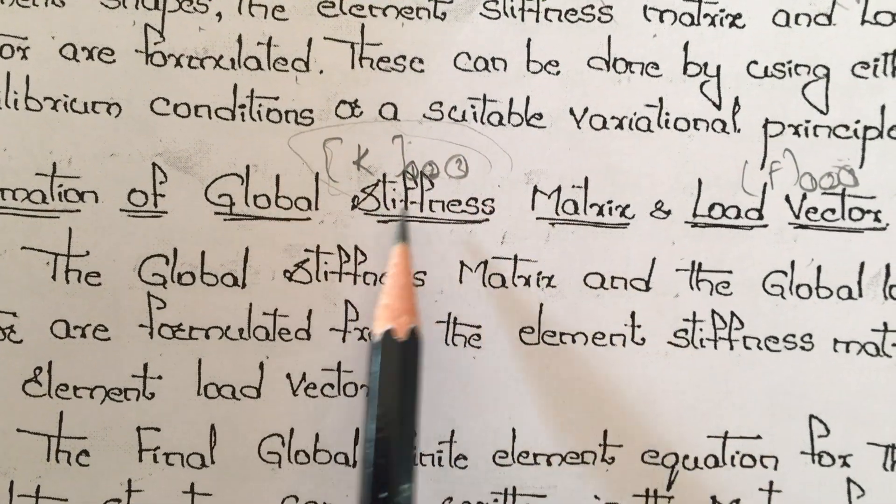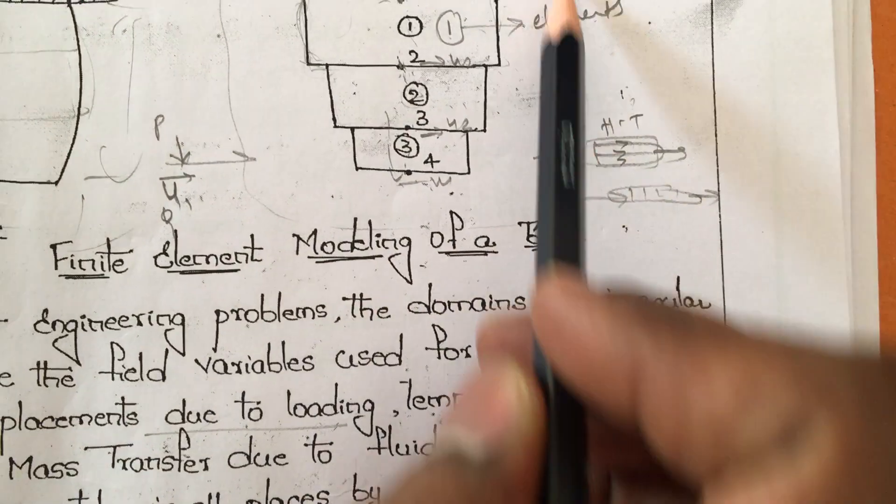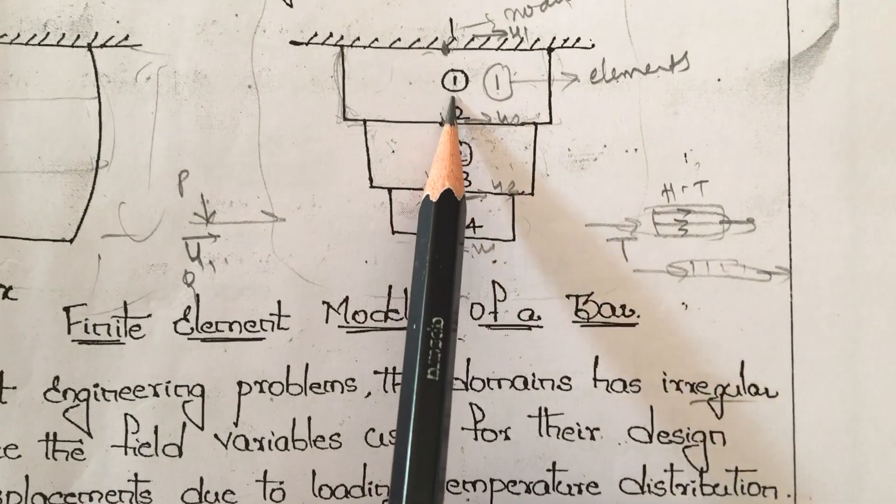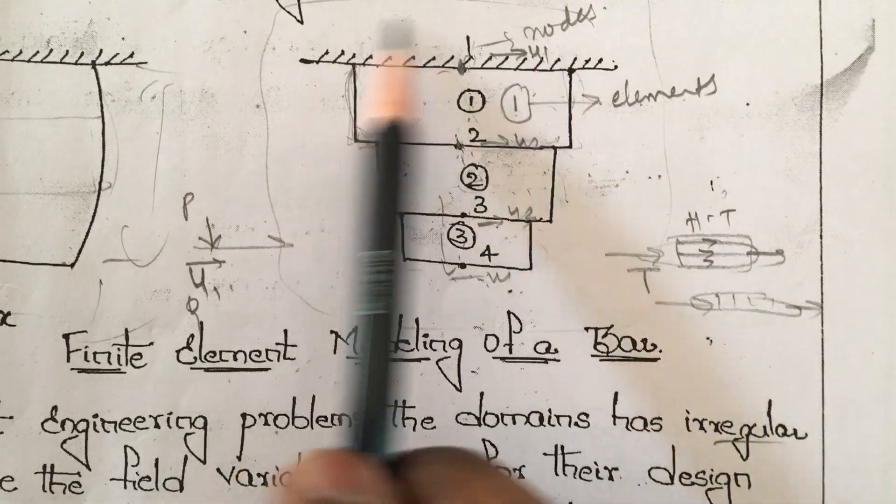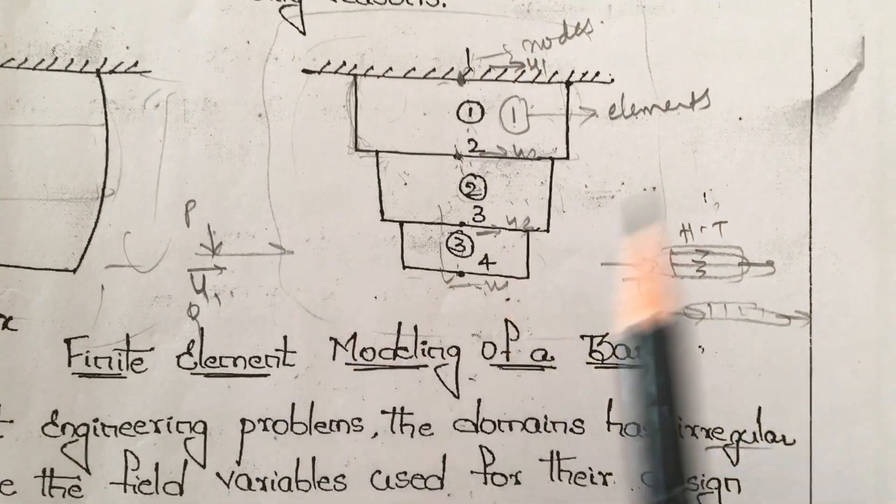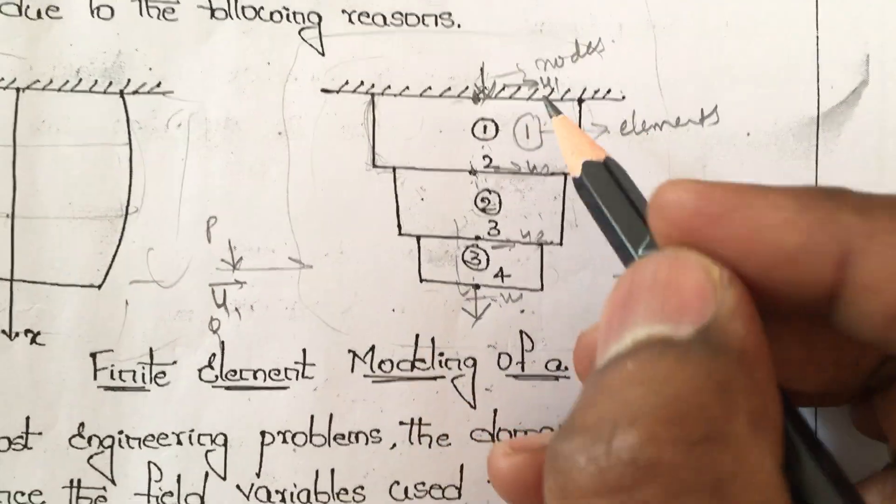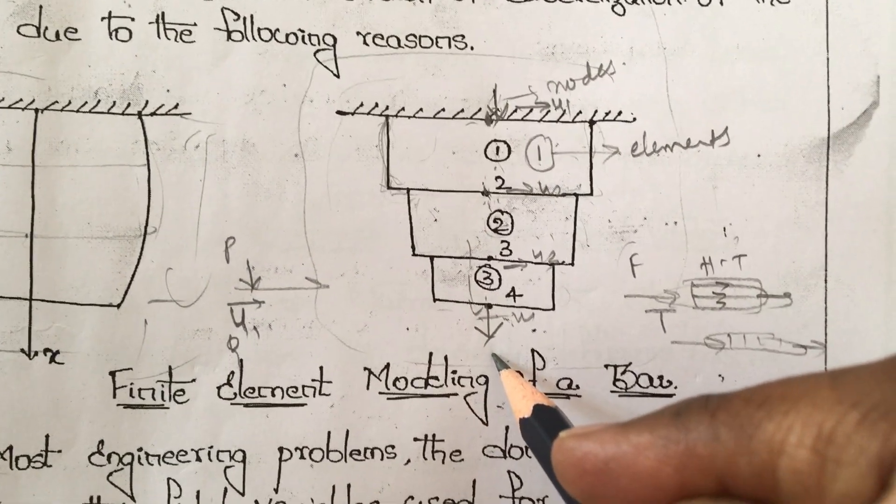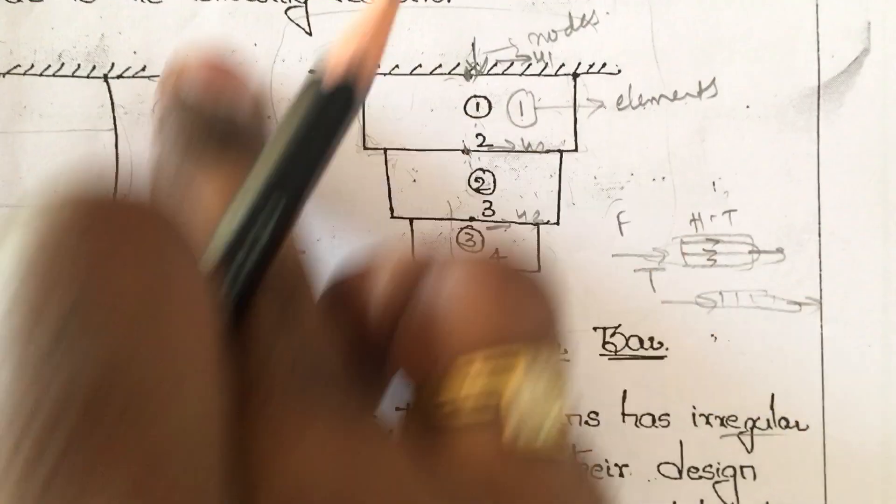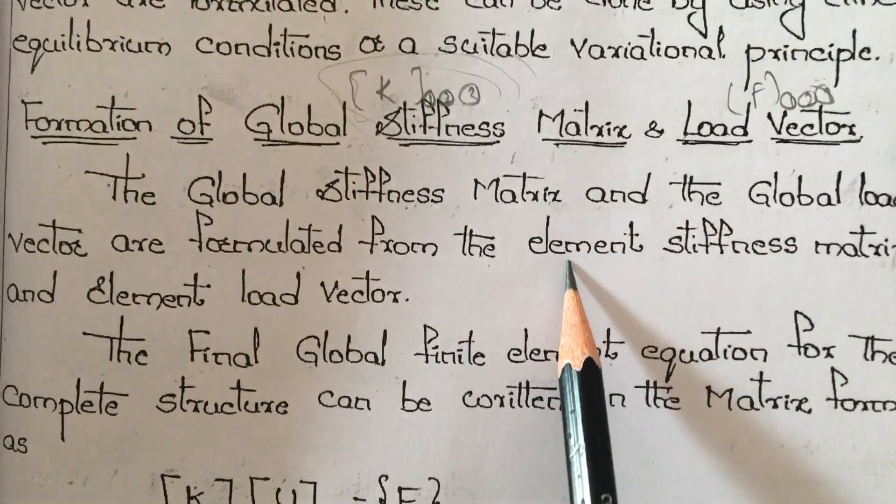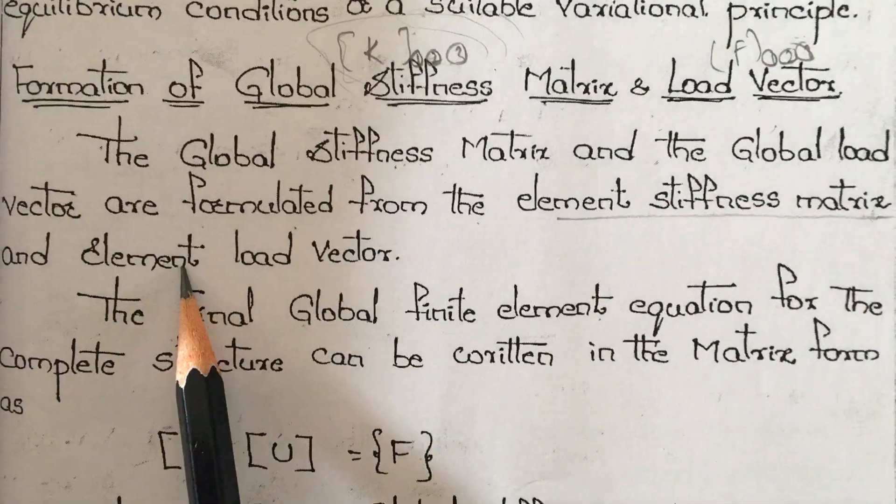The complete diagram's stiffness is called global. Individual elements are called local displacement. Doing element one, element two, element three separately, then combining completely is called global load vector. For example, loads act at node one and node two. We need to do element-wise, then talk about complete global. The global stiffness matrix and global load vector are formulated from elemental stiffness matrix and elemental load vector.